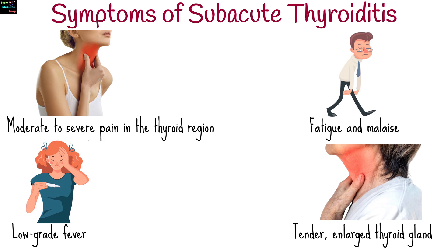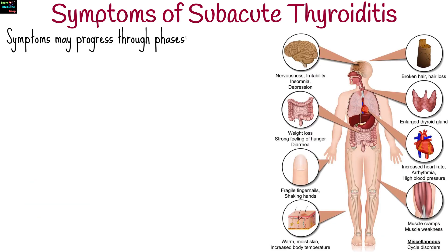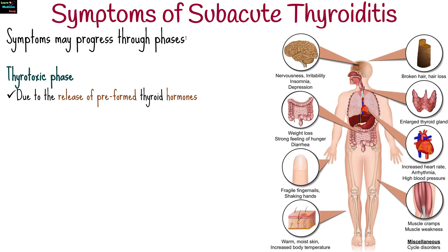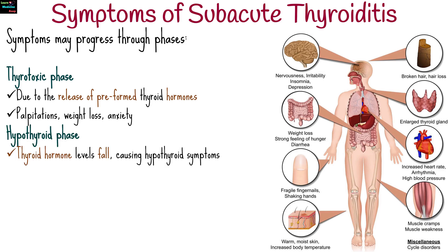Symptoms may progress through phases. The thyrotoxic phase is due to the release of preformed thyroid hormones as the gland is damaged. This phase presents with symptoms of hyperthyroidism such as palpitations, weight loss, or anxiety.